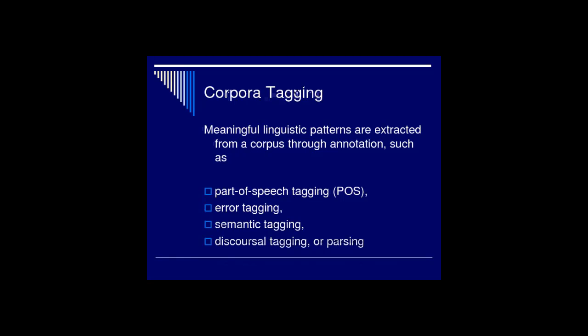This data has to be authentic — authentic first language or second language data. It should be textual data with explicit design criteria for a particular second language acquisition or first language training and teaching purpose. They use this data either for teaching first language learners their own language or for second language acquisition, and it must be authentic, natural language used in real-life situations, encoded in a standardized and homogenous way.